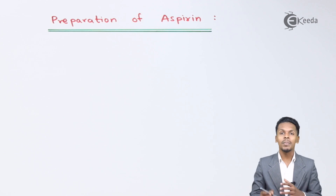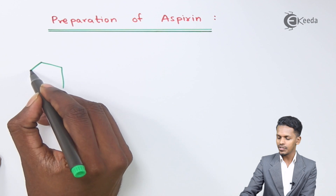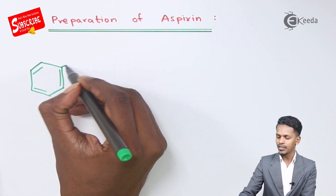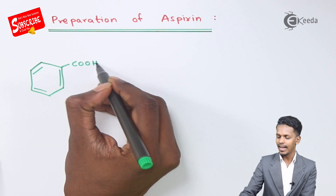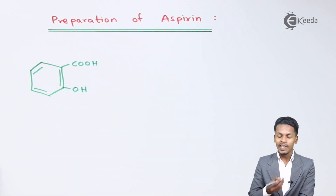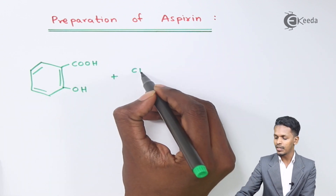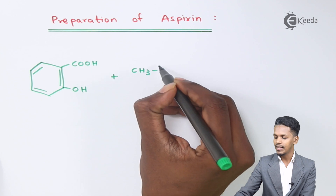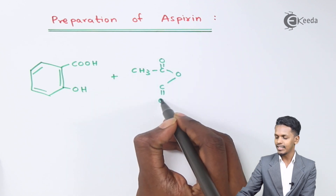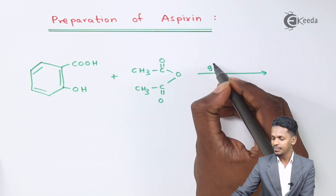Aspirin is basically formed from salicylic acid. Salicylic acid has a structure consisting of a benzene ring associated with a COOH group and an OH group. Whenever it undergoes the acetylization process — that is, with the usage of acetic anhydride, which is CH₃–C(=O)–O–C(=O) — that reaction takes place.